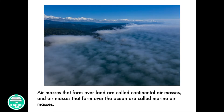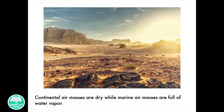Air masses that form over land are called continental air masses, and air masses that form over the ocean are called marine air masses. Continental air masses are dry, while marine air masses are full of water vapor.